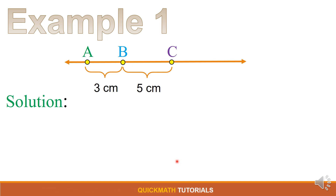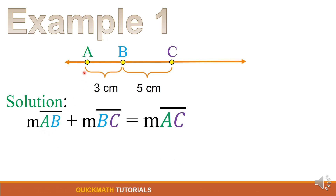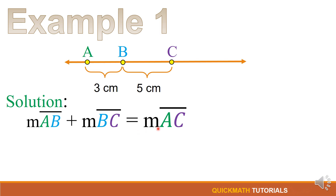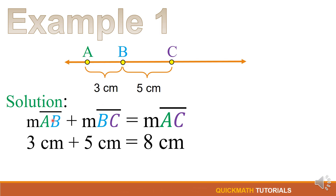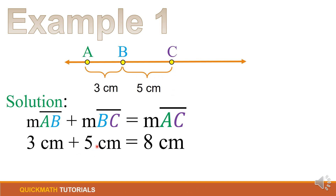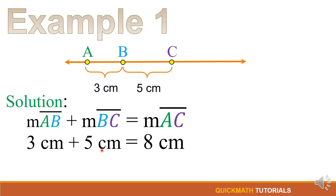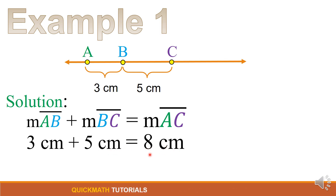For our solution, we will use the formula in the segment addition postulate: line segment AB plus the measure of line segment BC is equal to the measure of line segment AC. Now we will substitute the values. The measure of line segment AB is 3 cm and the measure of line segment BC is 5 cm. So we have 3 cm plus 5 cm is equal to 8 cm.